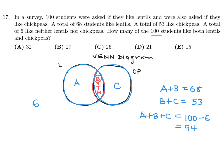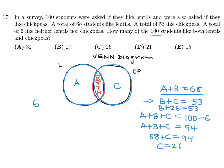From the Venn diagram: a plus b equals 68, so 68 plus c equals 94, giving c equals 26. Then b plus 26 equals 53, so b equals 27. Therefore number 17 is B — 27 students like both lentils and chickpeas.